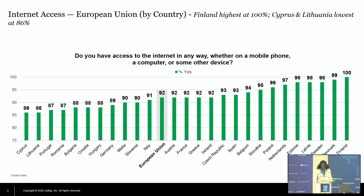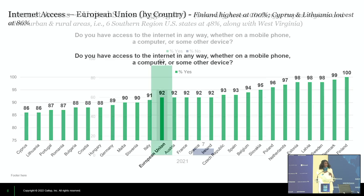The country breakdown for the European Union shows Finland and the other Scandinavian countries at the highest connectivity levels. At the lowest — which is still a high figure — you have Cyprus at 86%.